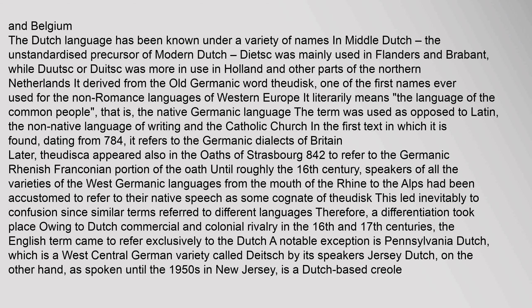The term 'Theodisk' also appeared in the Oaths of Strasbourg (842) to refer to the Germanic Rhenish-Franconian portion of the oath. Until roughly the 16th century, speakers of all West Germanic varieties from the mouth of the Rhine to the Alps referred to their native speech as some cognate of 'Theodisk.' A differentiation took place owing to Dutch commercial and colonial rivalry in the 16th and 17th centuries, and the English term came to refer exclusively to the Dutch. A notable exception is Pennsylvania Dutch, which is a West Central German variety. Jersey Dutch, spoken until the 1950s in New Jersey, is a Dutch-based Creole.